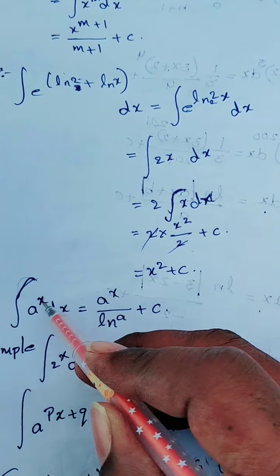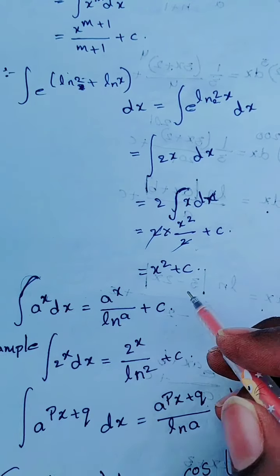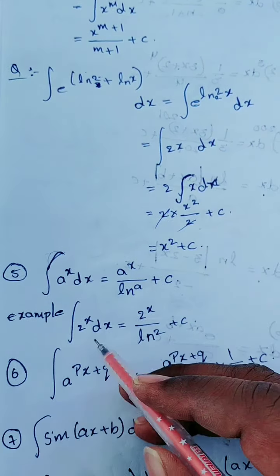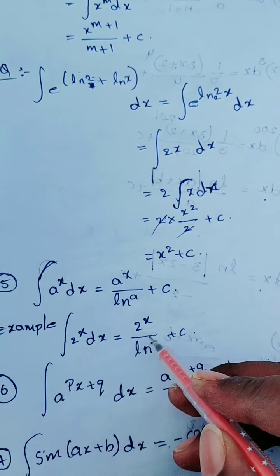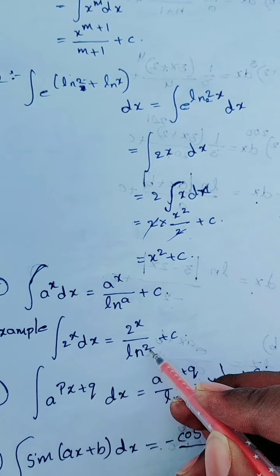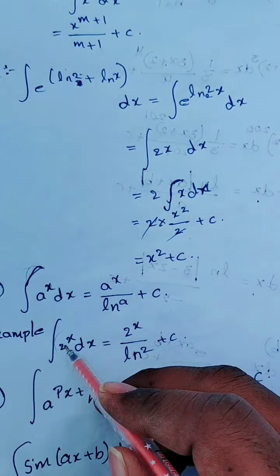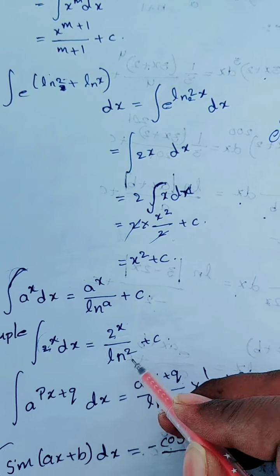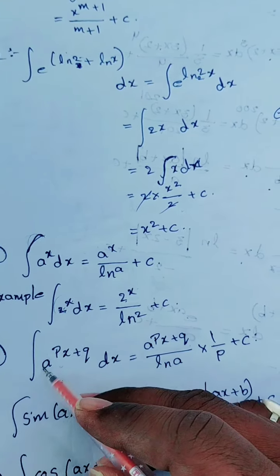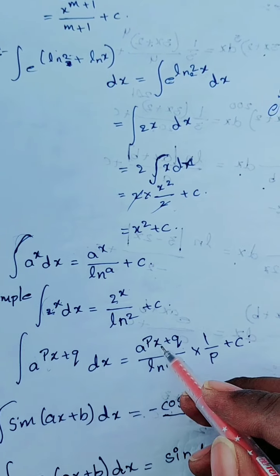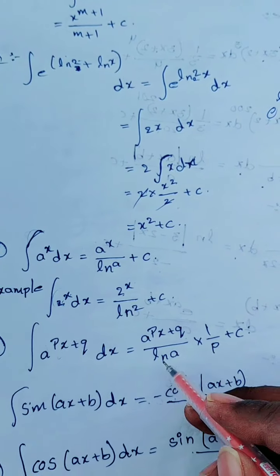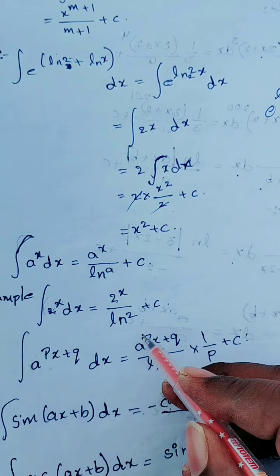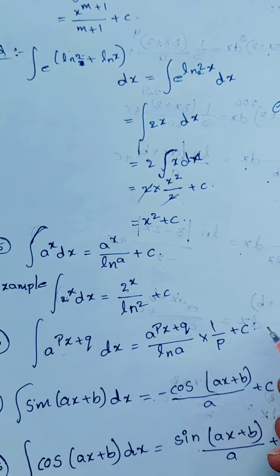There is another formula: integration of a power x dx is a power x upon ln a, plus c. So integration of 2 power x dx is 2 power x upon ln 2, plus c. If you have a constant power px plus q, then the result is: a power px plus q, divided by ln a, into 1 by p, plus c.